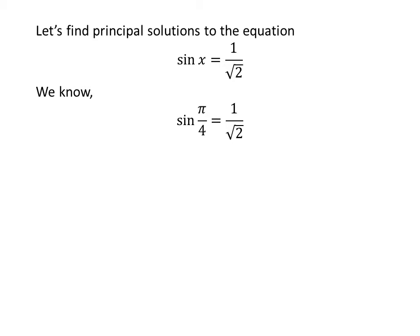We know the value of sine of pi upon 4 is 1 upon square root of 2. We also know the famous trigonometry identity sine of pi minus a is equal to sine of a.